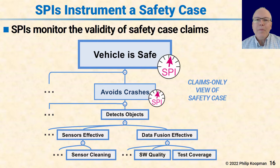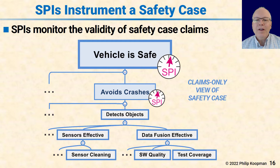SPIs come in by monitoring the validity of the safety case claims. An SPI is something that says, well, you said you were going to avoid crashes, but a crash just happened — so what's up with that? It may be acceptable in terms of the safety case to have a crash, as long as it's very seldom. So the SPI would collect data about how often crashes happen and compare that to a reference baseline.